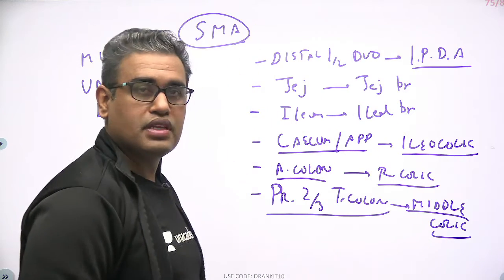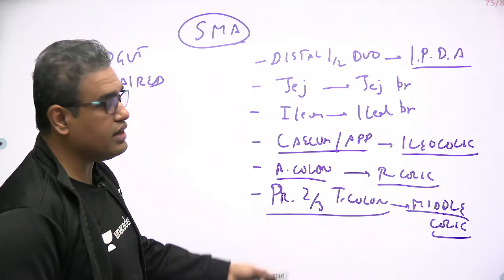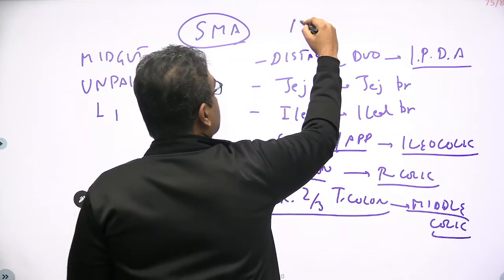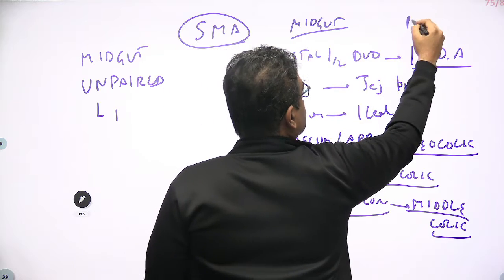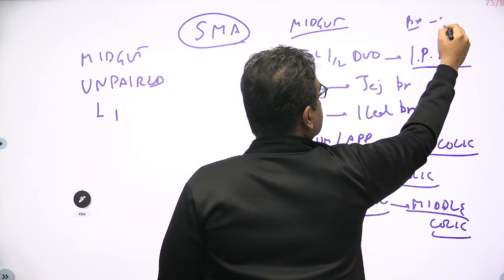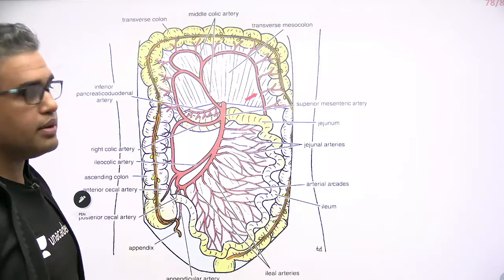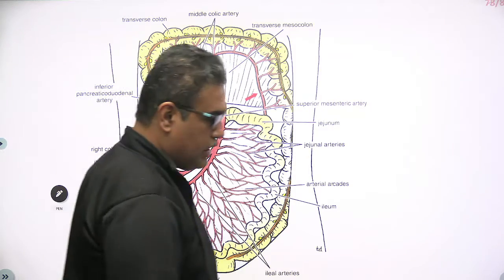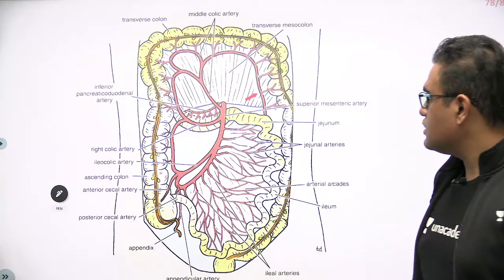Simple as that — these are all the branches of the superior mesenteric artery, because these are the structures derived from the midgut. So I am writing here: midgut and the branches from SMA. Let us quickly look at them — these are the branches of the superior mesenteric artery shown here, and we can very well see all the branches.